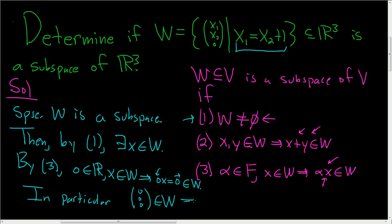And what does that mean? Well, that means we can write (0, 0, 0) equal to (X1, X2, 0), right? Because that's what vectors in here look like. They're all X1, X2, zero. So (0, 0, 0) is a vector just like that with X1 equals X2 plus one.